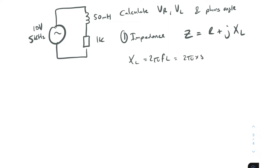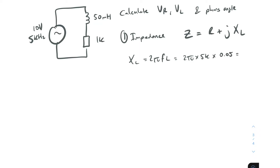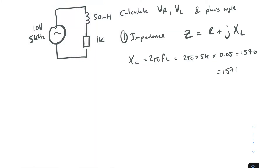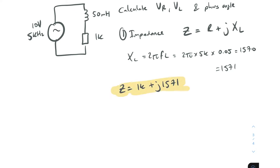So XL = 2π × 5000 × 0.05. Putting that into the calculator: 2π × 5000 × 0.05 gives us 1571Ω. We already have the resistor value of 1kΩ, so our impedance in rectangular form is Z = 1000 + j1571.